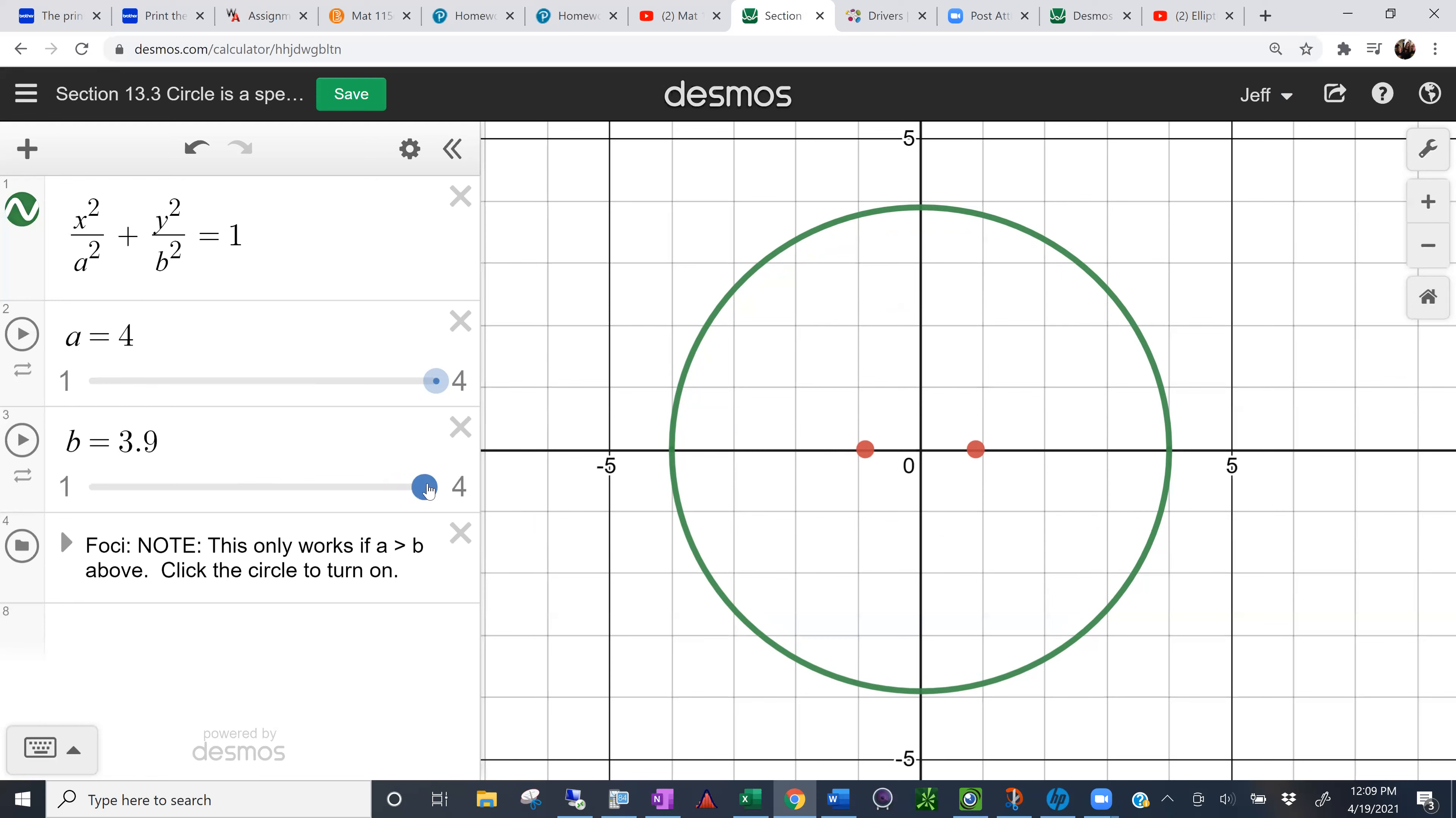Now what happens if I move this instead of b being 3.9, what if I make exactly four? Watch what happens to the foci. Bam, they coincide. So you can see that the circle is actually a special case of an ellipse.